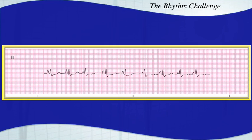Take a good look at the rhythm. This one is multifocal atrial tachycardia. Note the different morphologies of the P waves — that's your dead giveaway. When you have multiple P-wave morphologies, you've got to start thinking either wandering atrial pacemaker, or if it's greater than 100 beats per minute, it would be MAT — multifocal atrial tachycardia.